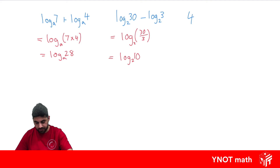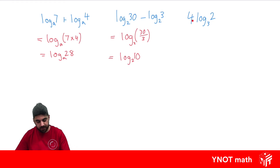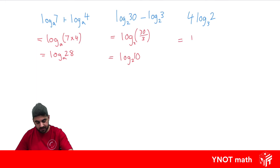How can we rewrite 4 log 2 base 3? Well, when we have a number at the front of the log, we can put it up into the power of what we're finding the log of. So we can rewrite this as log of 2 to the power of 4, base 3. And 2 to the power of 4 is 16, giving us log 16 base 3.